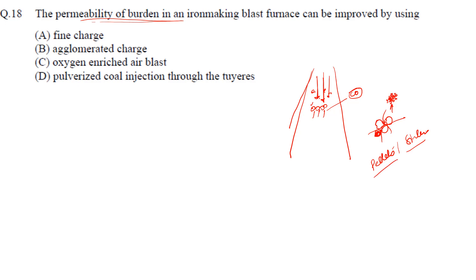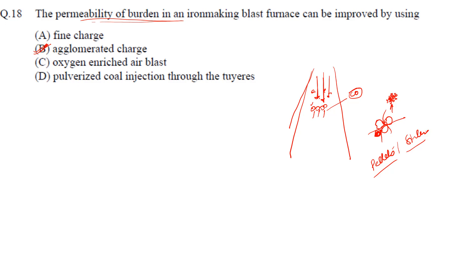After pelletizing and sintering, we charge the raw material. The correct answer is option B — agglomerated charge. Oxygen-enriched air blast and pulverized coal injection through tuyeres are not related to improving burden permeability.